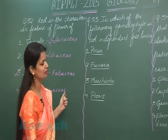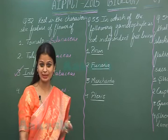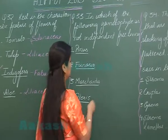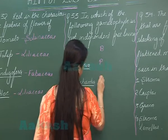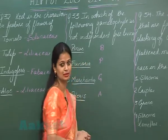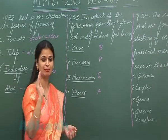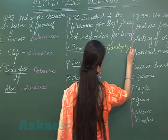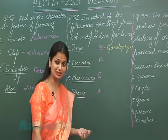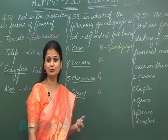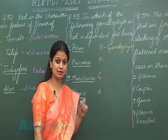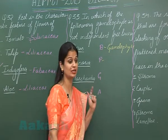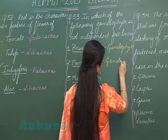Coming to question number 33: in which of the following is the gametophyte not independent and free-living? The four terrestrial groups of plants are bryophytes, pteridophytes, gymnosperms, and angiosperms. In bryophytes, the main body is the gametophyte, so it is free-living. In the majority of pteridophytes, the main body is the sporophyte but the gametophyte is still free-living.